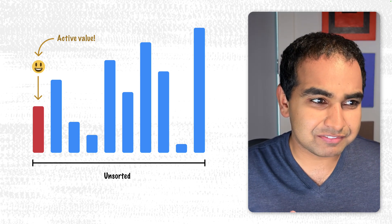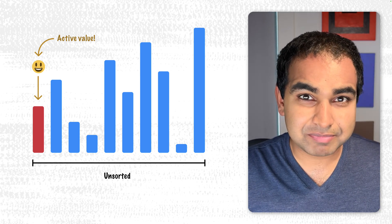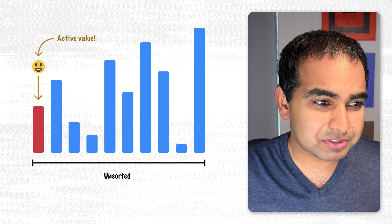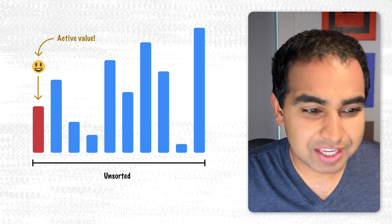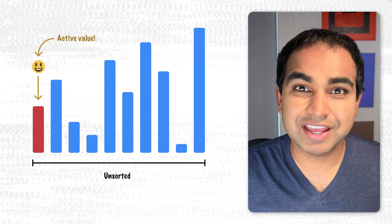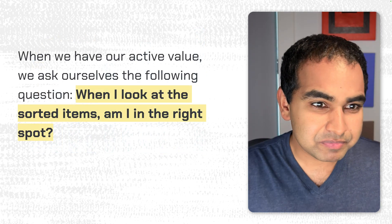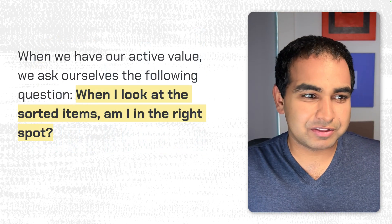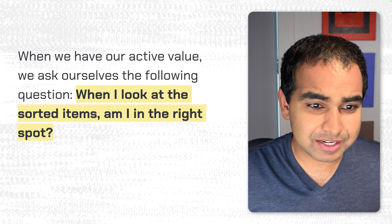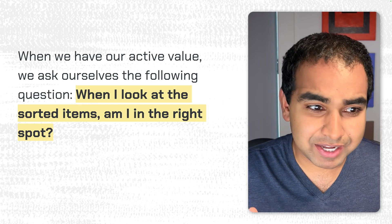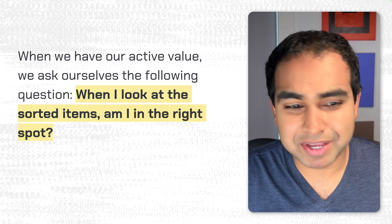At the very beginning, we just start with the first unsorted number, which is going to be the first value in our collection right here. We want to mark it and call it an active value. I'm going to call it an active value for a particular reason, because by giving it a name we're going to be able to specify how this value is different than all the other values we'll be seeing in a few moments, especially the sorted values and the unsorted values. Whenever we have an active value, we ask ourselves the following question: when I look at the sorted items, am I in the right spot?